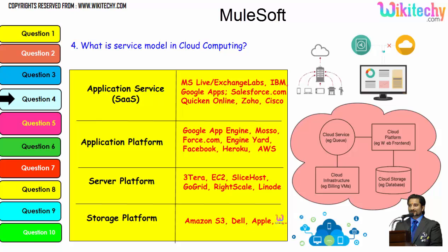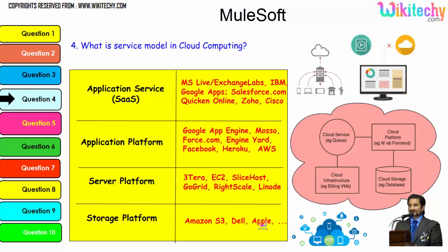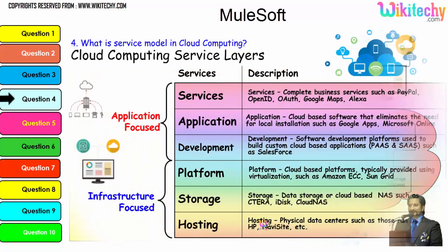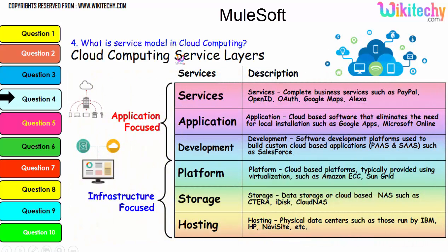Digging further into the service model, the typical examples are: application service, application platform, server platform, and storage platform — provided by Amazon S3, Dell, and Apple. The important service layers are: services, application, development, platform, storage, and hosting. These are important services which will also be asked in interviews about cloud computing.